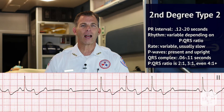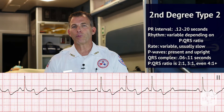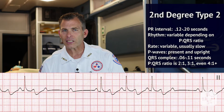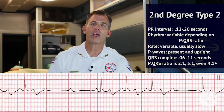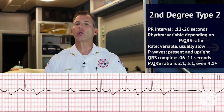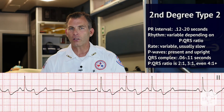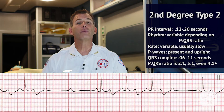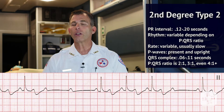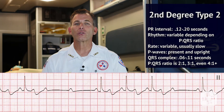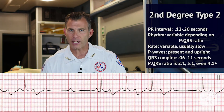The QRS complex is .06 to .11 seconds while the P wave to QRS ratio is variable as well, and can be seen as 2 to 1, 3 to 1, or even as much as 4 to 1 and beyond.